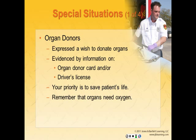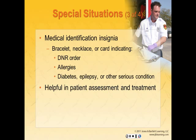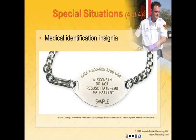Medical identification insignia — bracelets, necklaces, or cards — may indicate DNR orders, allergies, or conditions like diabetes or epilepsy. These are very helpful in patient assessment and treatment, especially if the patient cannot communicate with you. In Montana, organ donor status is indicated on your driver's license. There are also specific DNR EMS bracelets used in some states, such as a Wisconsin DNR EMS bracelet.